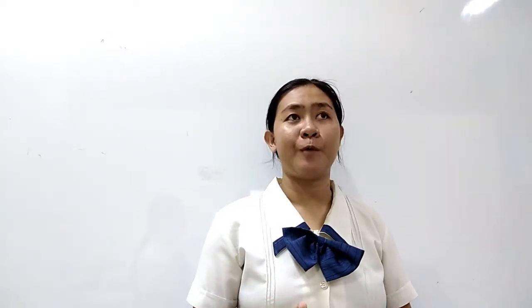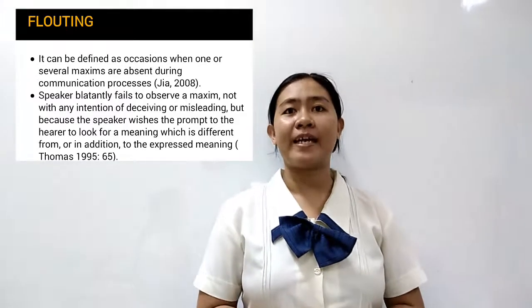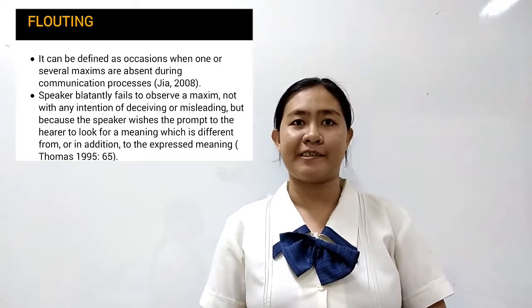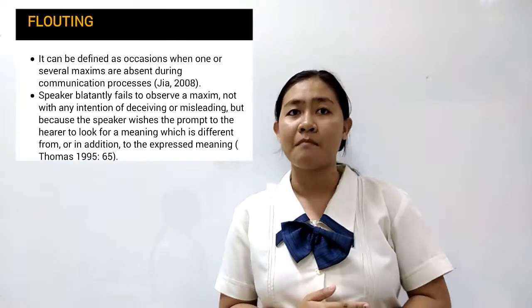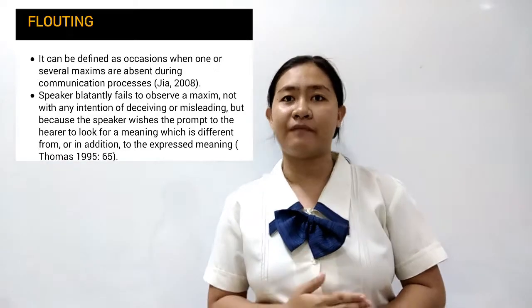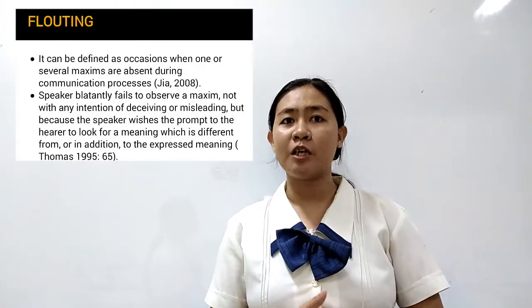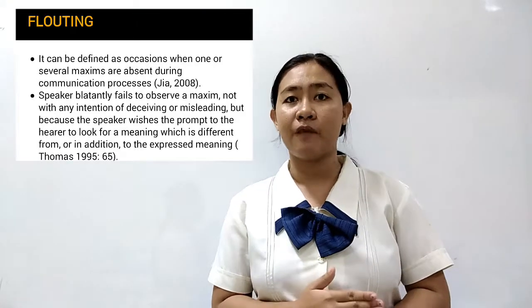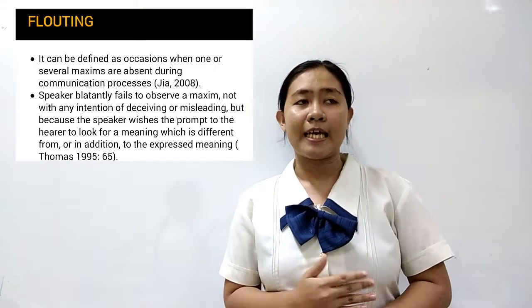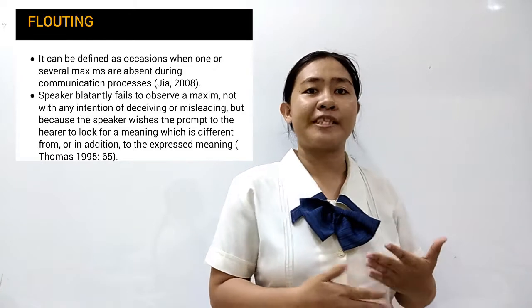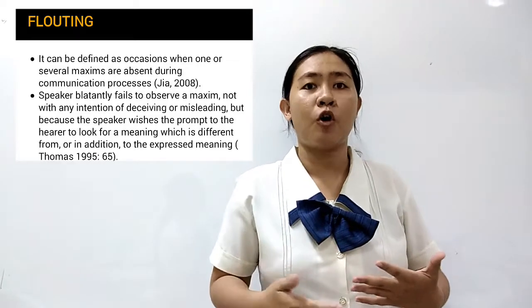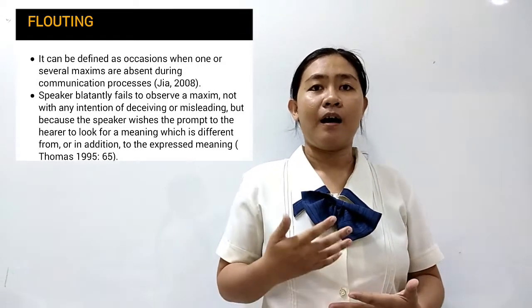The second breaking of the maxim is flouting. Flouting can be defined as occasions when one or several maxims are absent during the communication process. The speaker blatantly fails to observe a maxim, not with any intention of deceiving or misleading, but because the speaker wishes to prompt the hearer to look for a meaning which is different from or in addition to the expressed meaning. It means in flouting there is no intention to deceive the hearer, but the speaker wants the hearer to generate another meaning from the expressed meaning.